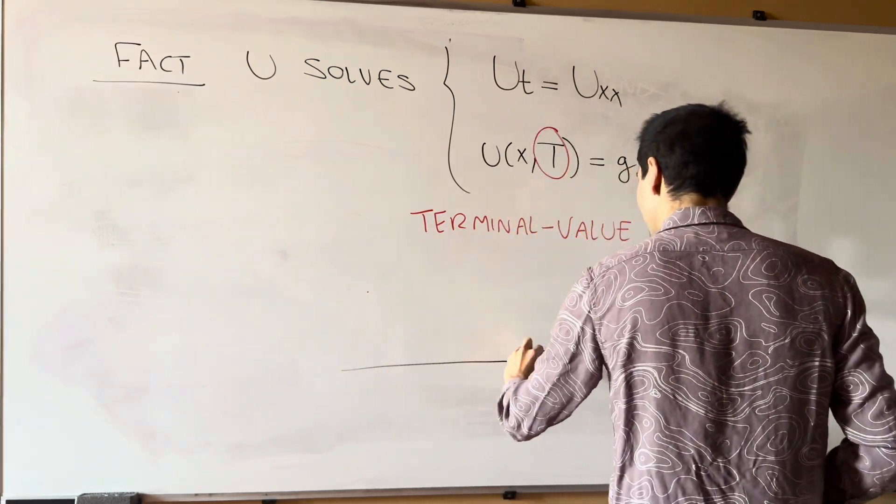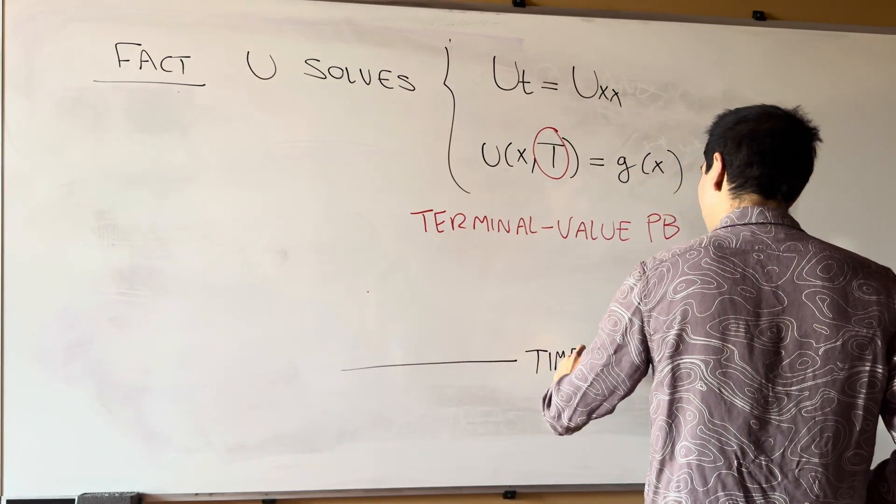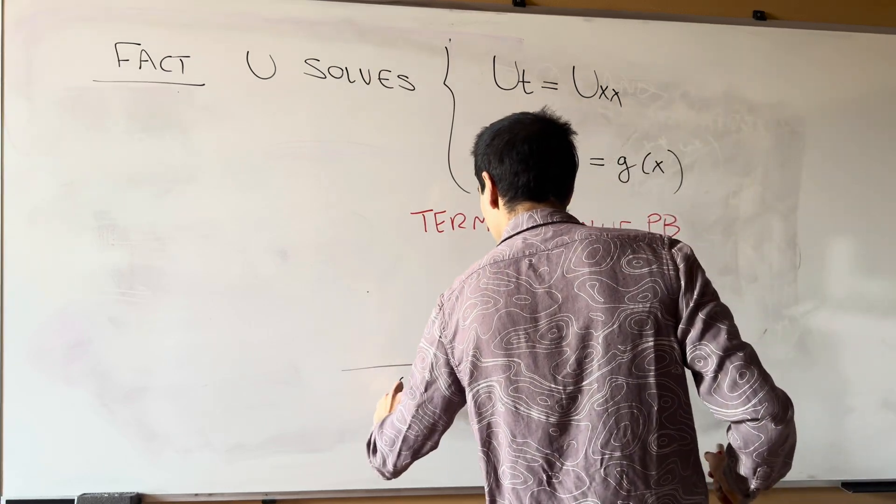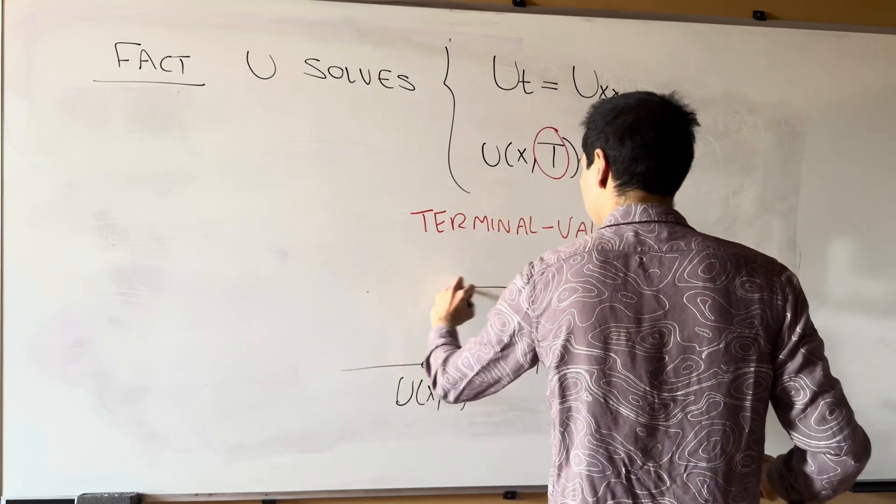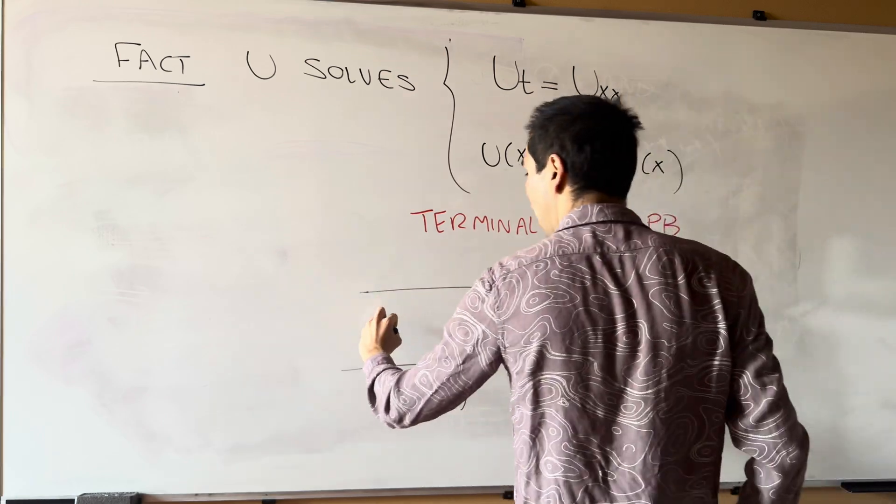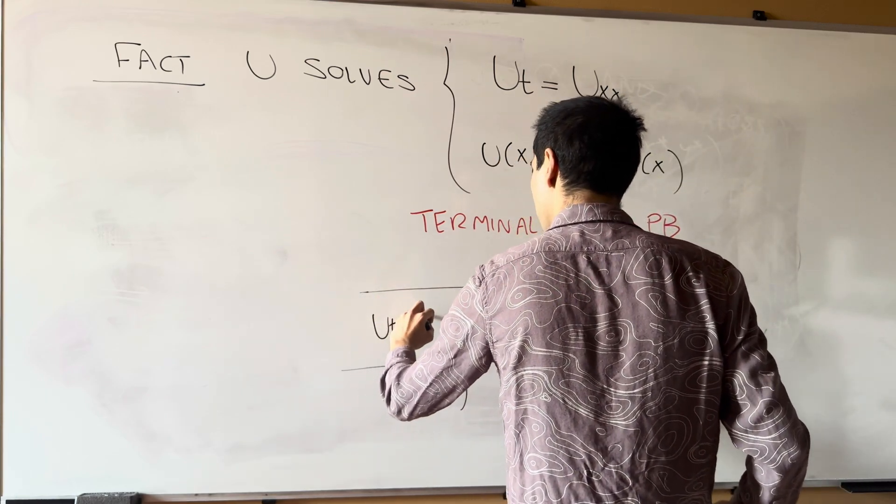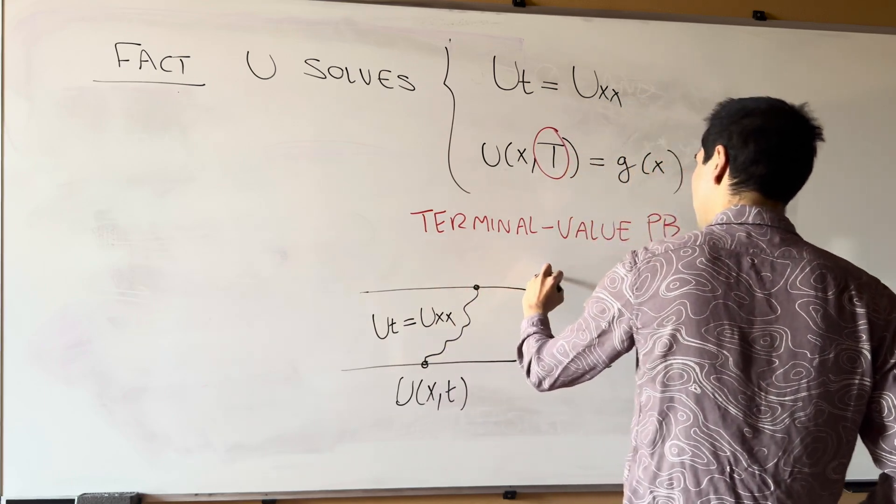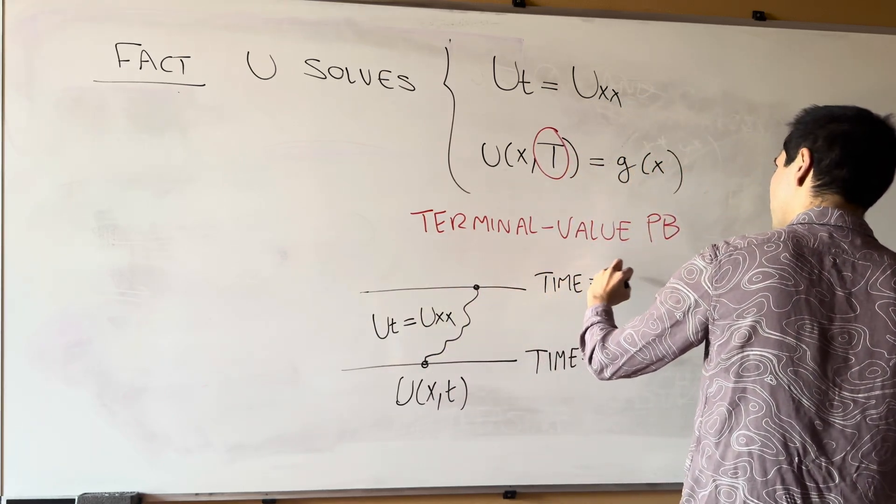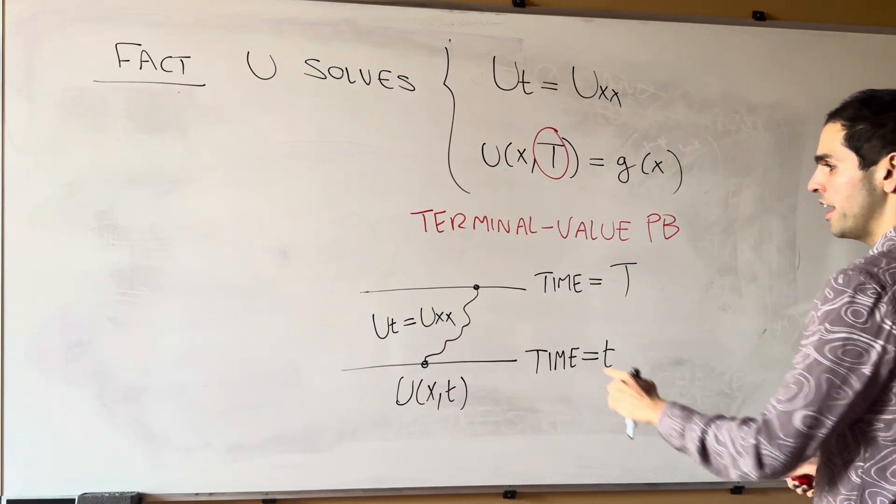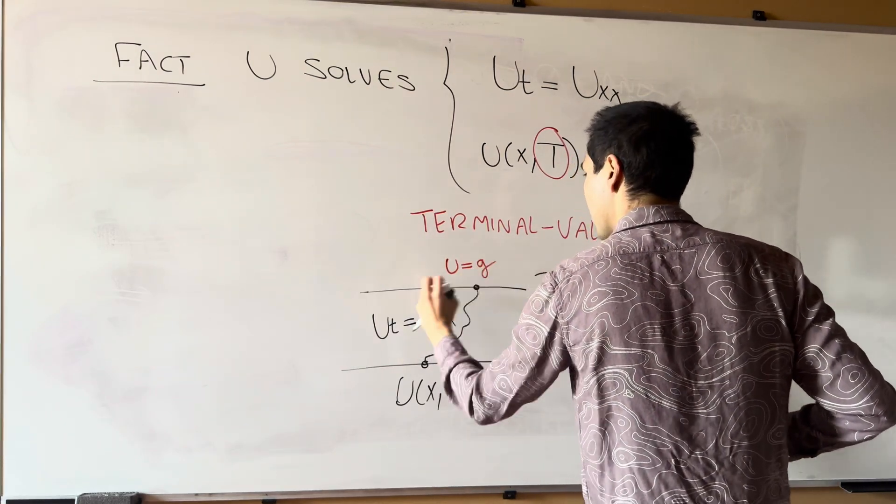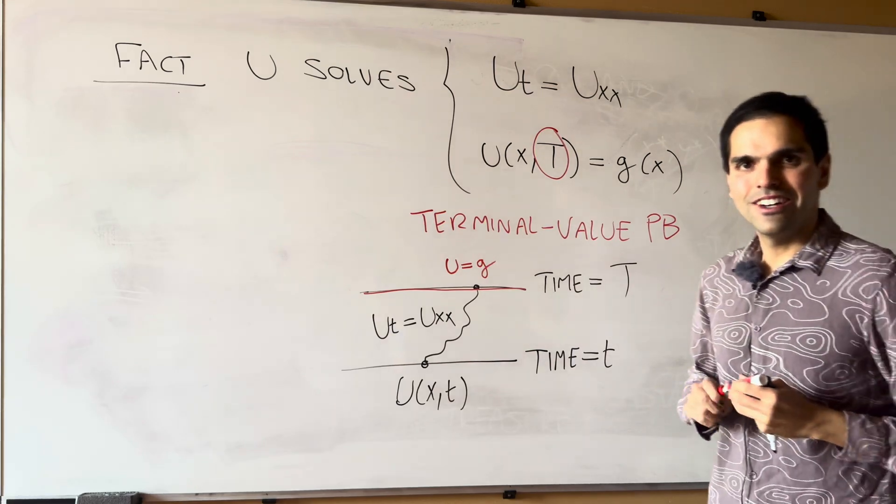Because here we're specifying the time at the end and not at the beginning. So, the way to visualize this here is we have time equals t. And maybe this is u of x t. And then inside we have the heat equation. And at time equals capital T, then u is just g.